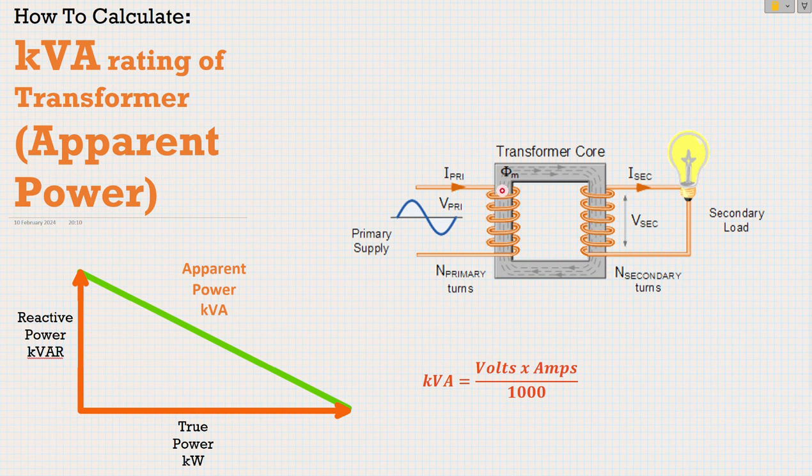We have resistive losses inside the windings. We also have reactive losses inside here - our inductive reactance inside this transformer core.